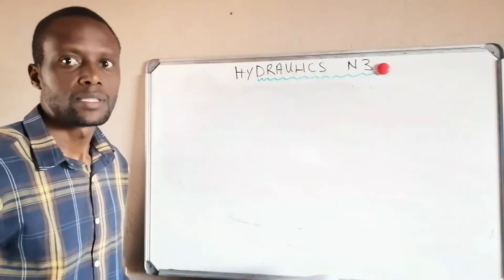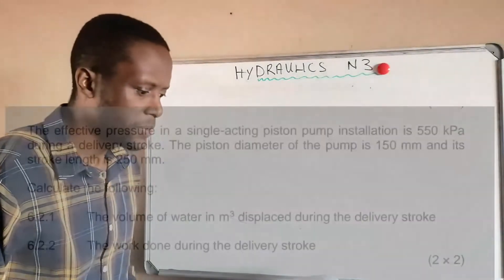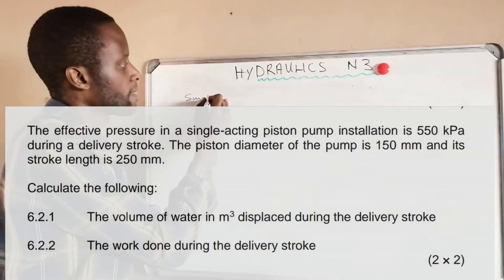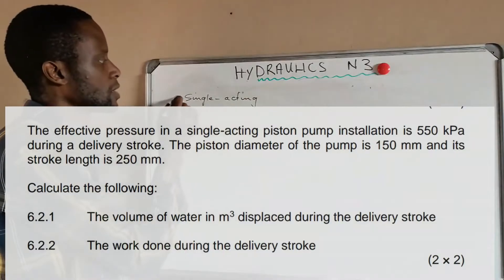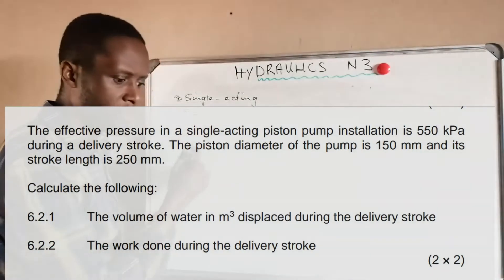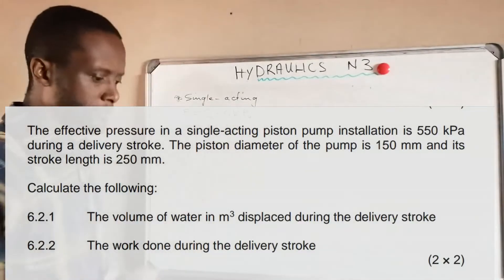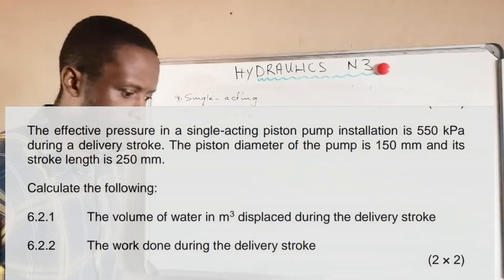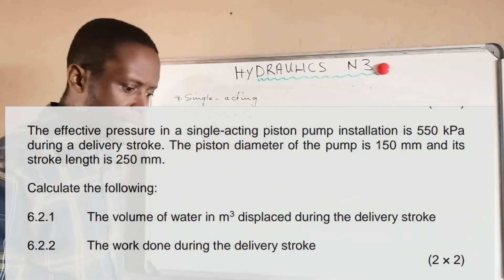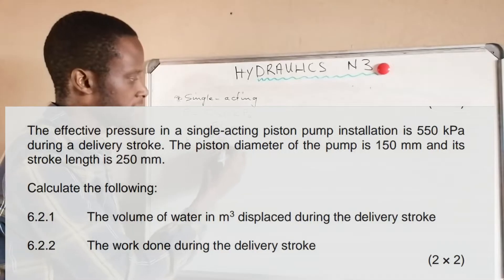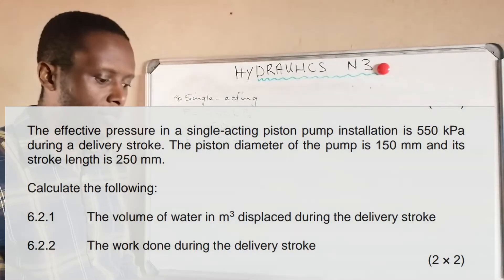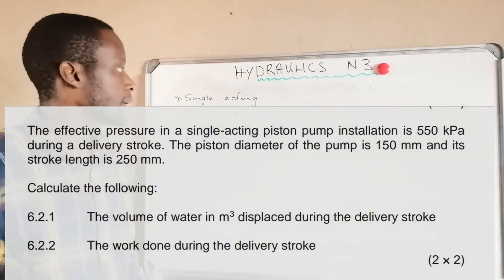Here is a practice question. The effective pressure in a single acting piston pump installation is 550 kilopascal during a delivery stroke. The piston diameter is 150 millimeters and the stroke length is 250 millimeters. Calculate: (a) the volume of water in cubic meters displaced during the delivery stroke, and (b) the work done during the delivery stroke.